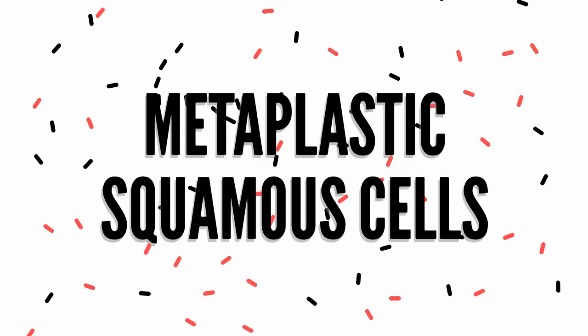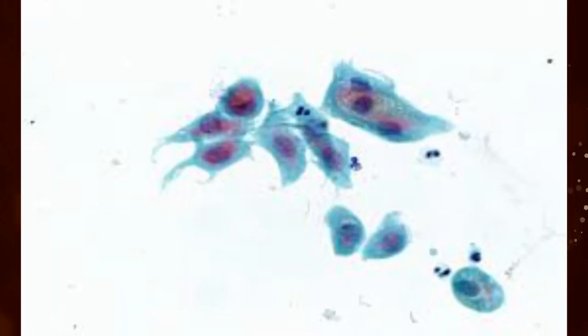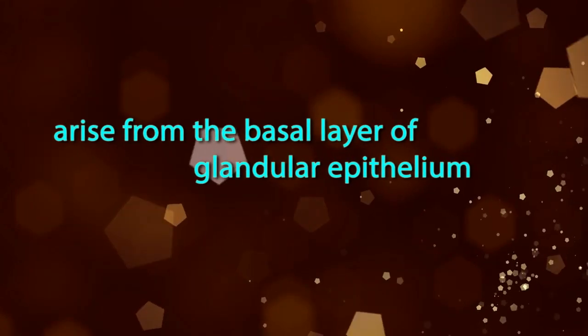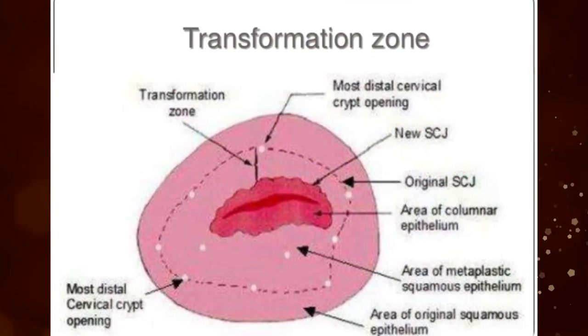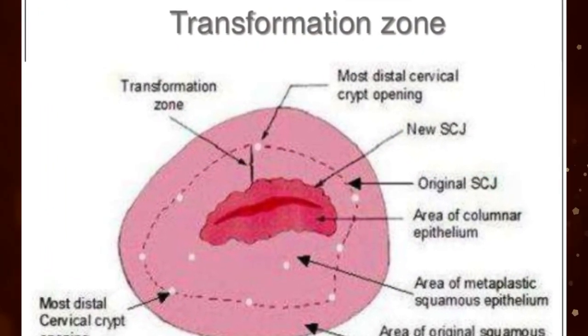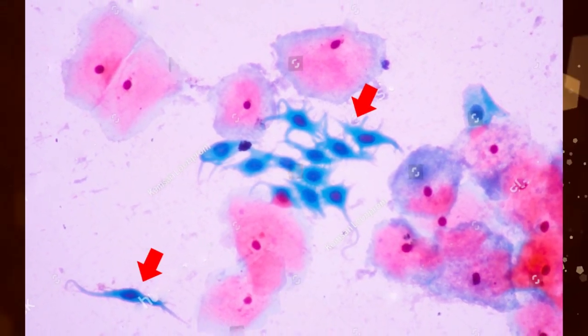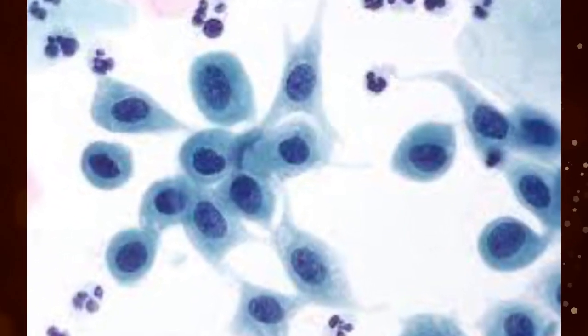Metaplastic Squamous Cells are round to polygonal in shape, with dense blue-green staining cytoplasm and round centrally located nuclei. They arise from the basal layer of glandular epithelium as a protective response to stimuli, creating the transformation zone. Metaplastic cell size is usually about 20 to 30 micrometers. They occur singly and in loose sheets, and also show a cobblestone pattern of arrangement.